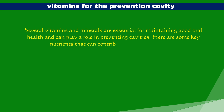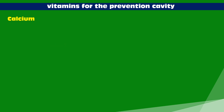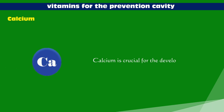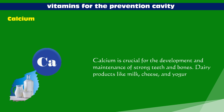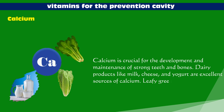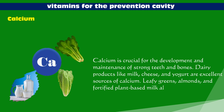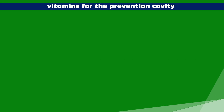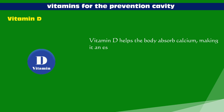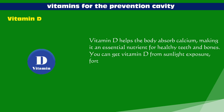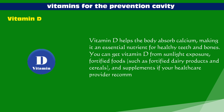Calcium is crucial for the development and maintenance of strong teeth and bones. Dairy products like milk, cheese, and yogurt are excellent sources of calcium. Leafy greens, almonds, and fortified plant-based milk alternatives like almond milk or soy milk are also good options. Vitamin D helps the body absorb calcium, making it essential for healthy teeth and bones. You can get vitamin D from sunlight exposure, fortified foods such as dairy products and cereals, and supplements if your healthcare provider recommends.